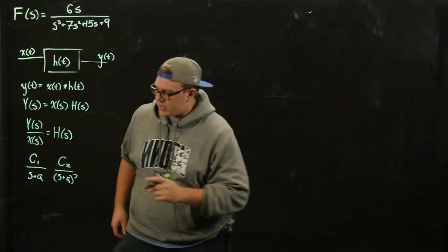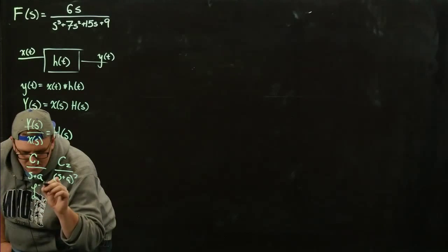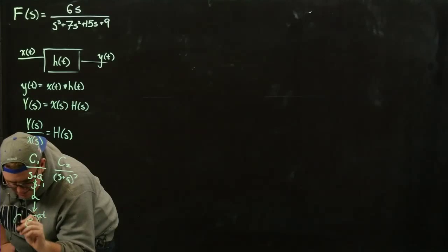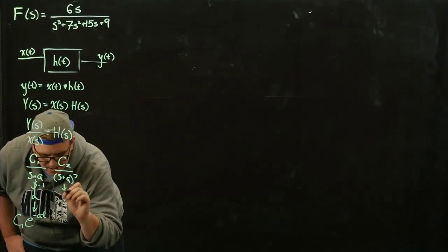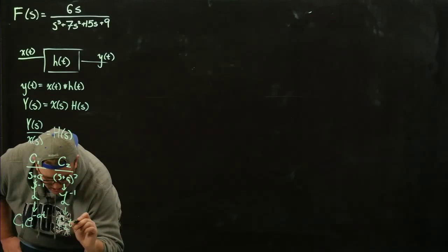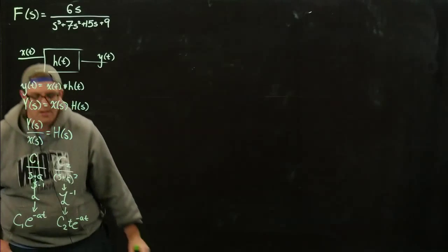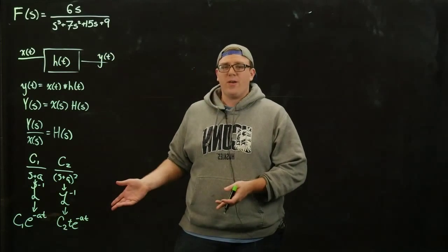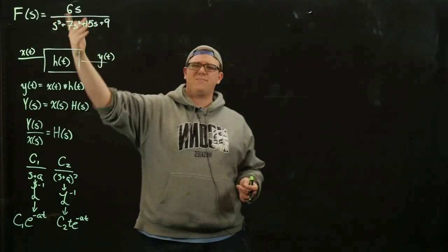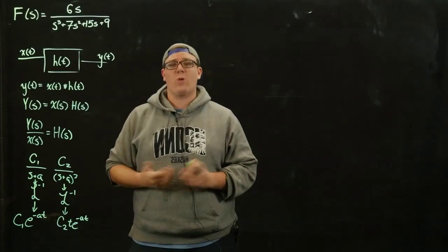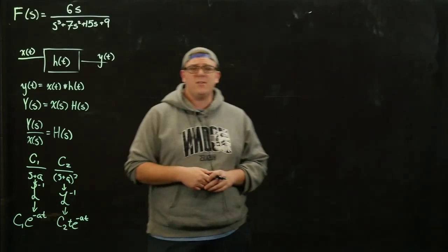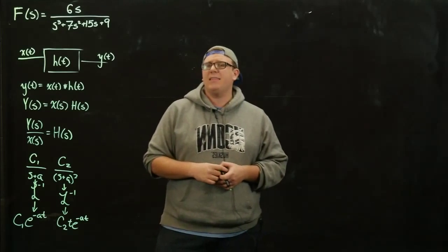These standard forms go to common functions that we're familiar with because they come up a lot. For instance, a constant over s plus a goes to e to the negative at times c1 under an inverse Laplace transform. Similarly, a constant over s plus a squared goes to c2 t e to the negative at. So these are ones we're familiar with, and it would be nice to use them all the time. Unfortunately, we end up with uglier functions, so we use partial fraction decomposition to write them in familiar forms.